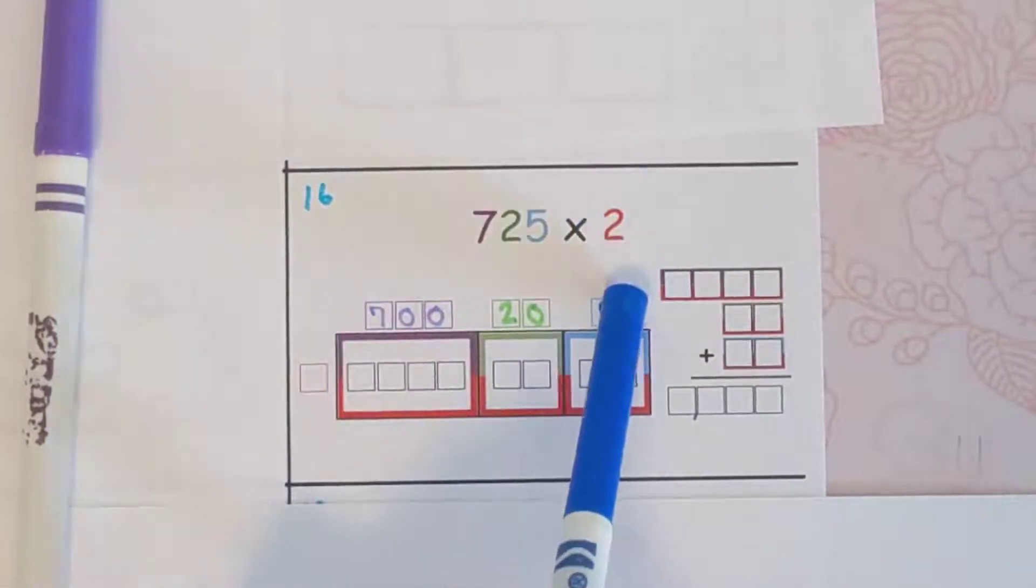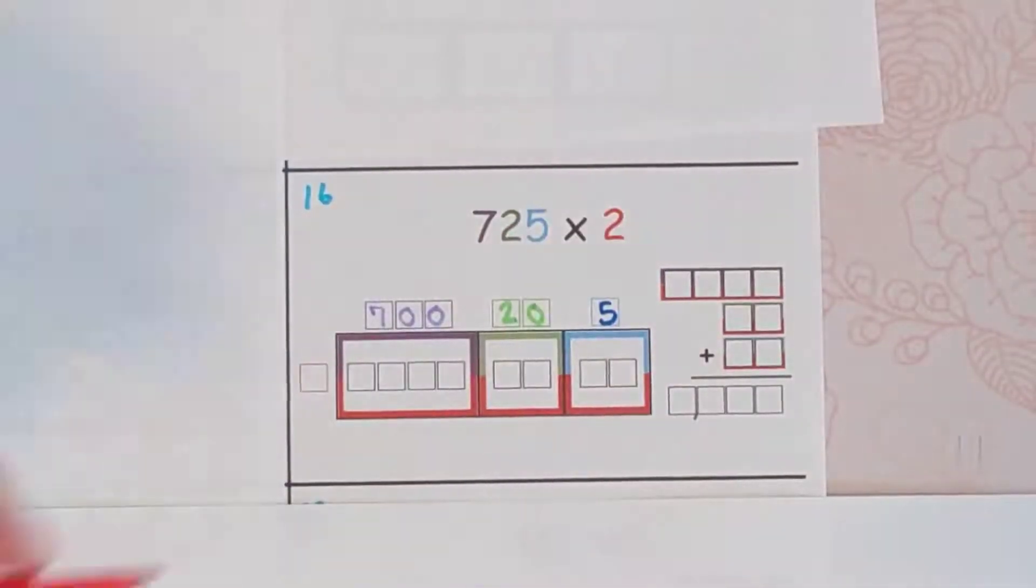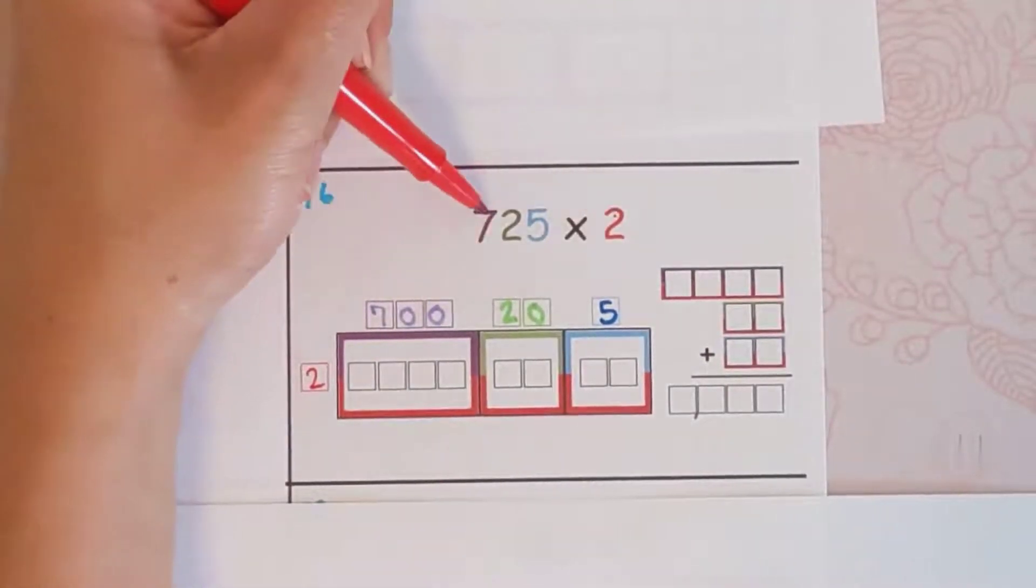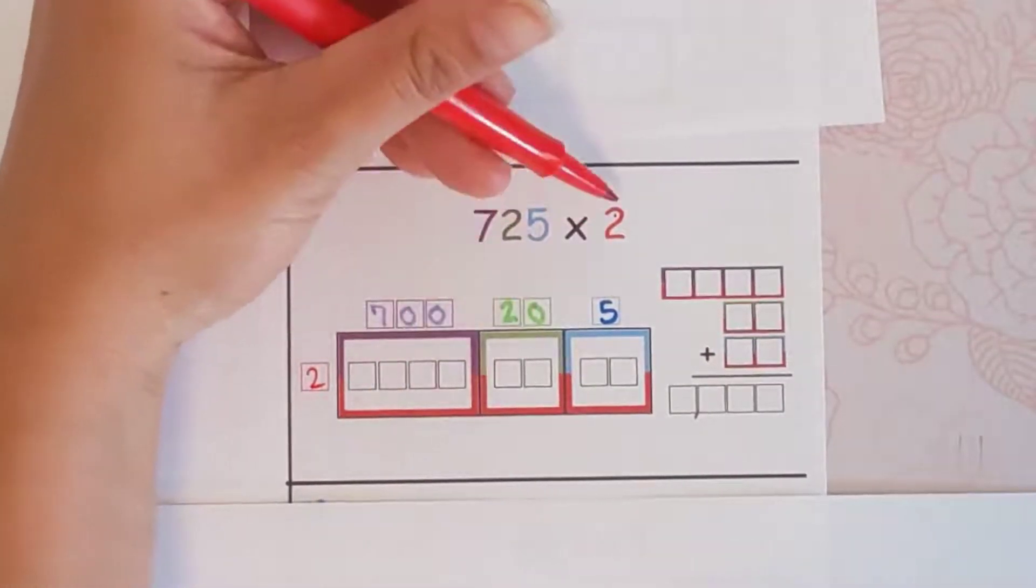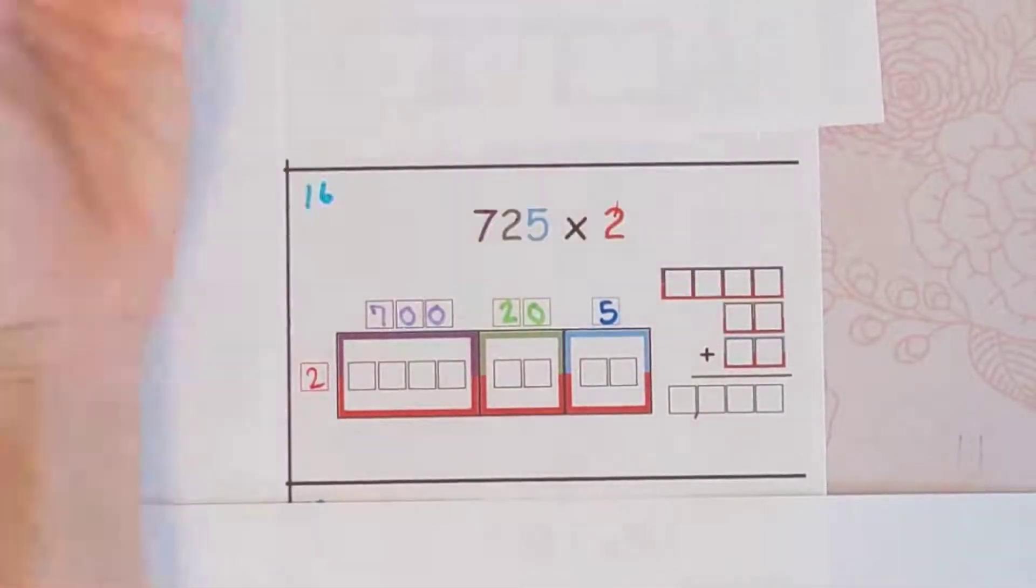And then they're going to go against the 2, so the 2 is a different number, so it's going to go over here on the side. And then basically what we're doing is 2 times 700, then 2 times 20, and then 2 times 5. And then we're just adding all that together.